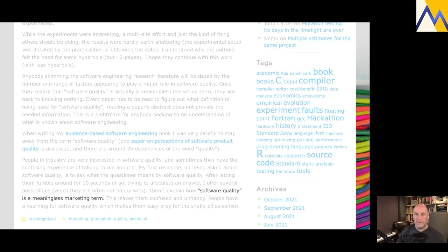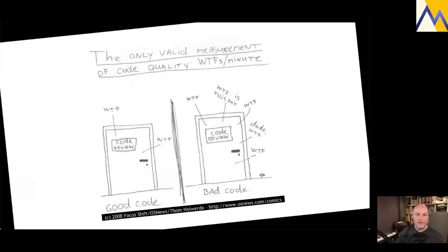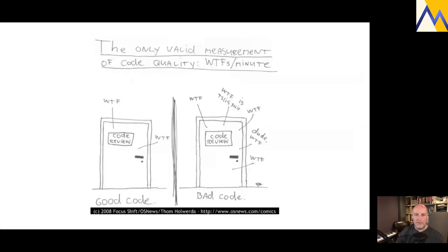Of course, we have the famous cartoon to fall back on - everyone knows this one: the only valid measurement of code quality, WTFs per minute. The reason this is funny is it resonates with us, we can relate to it. There's an idea here that nobody can actually define what software quality or code quality is, but we know it when we see it. That's really the essence of this.